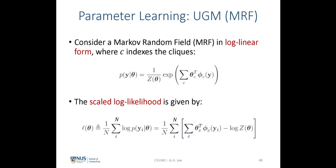Let's move our attention to parameter learning on the Markov random field. We'll consider a Markov random field in a log-linear form where C indexes the cliques. As seen in the previous lecture, the joint probability of the random variables Y — representing Y1 through Yn — conditioned upon the unknown parameters theta, is given by the exponential of the log-linear clique potential terms, which are feature terms from the random variables and parameters within a clique of Yc, given by a linear dot product. Z is the partition function.